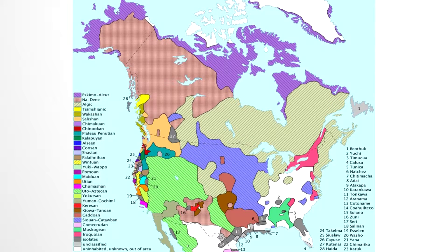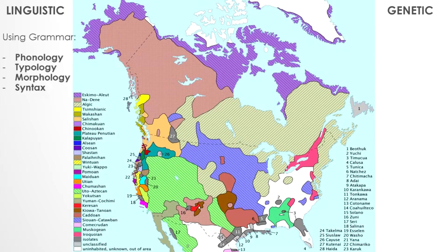How do we try to connect isolated languages to other language families? We use two specific methods: linguistic and genetic. We have already covered linguistic connections — we know how it is possible to identify similarities between known languages, connecting and corresponding them to current language families. Based on correspondences, linguists suggest possible genealogical connections between these languages. So, let's jump into the genetic data being used to connect isolated languages to other language families.